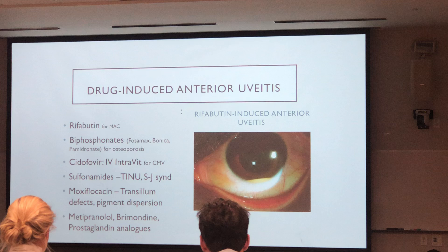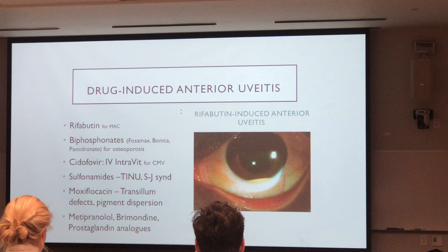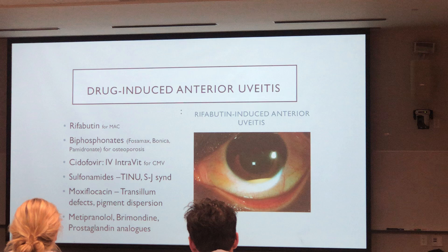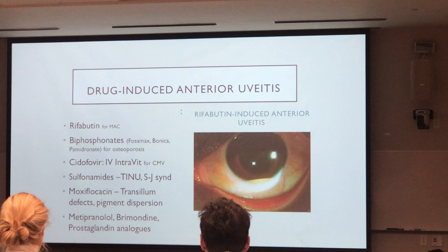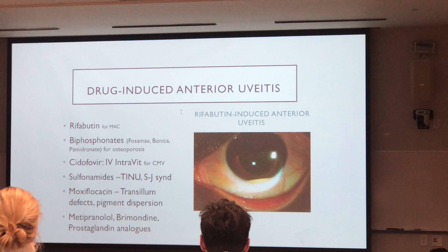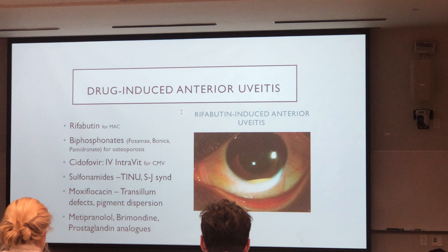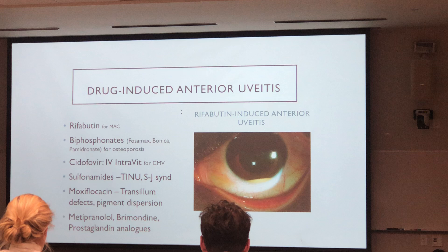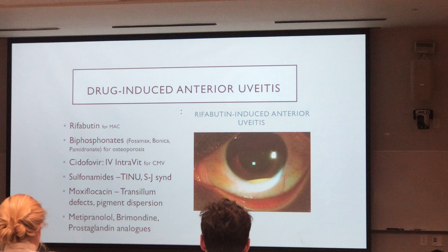One of the things you need to know is drugs that may induce uveitis. The most likely ones you will see on your exam will be either rifabutin — used for the treatment of Mycobacterium avium complex — or one of the drugs used for osteoporosis, like Fosamax or cidofovir. More recent reports involve moxifloxacin taken systemically, associated with transillumination defects and pigment dispersion. Metipranolol, a beta blocker, has been found to be associated with granulomatous inflammation, though it's no longer really used. It's questionable how much brimonidine and prostaglandin analogs really cause uveitis.